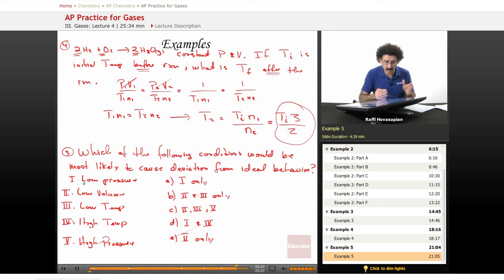Choice A, one only - low pressure. No, that's not it. Choice B, two and three only. Well, low volume, yes, that will do it. Low temperature, yes, that will induce a low volume. High temperature, no. But there's also high pressure, which will also cause a low volume. So B says two and three only, but two, three, and five all work, so it isn't B.